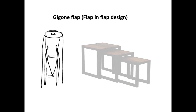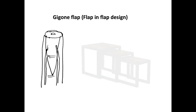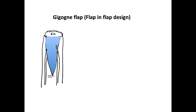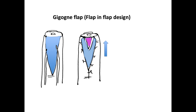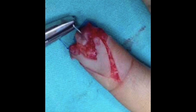The next modification of the VY advancement flap for the fingertip is the Gigan flap, a French word denoting one within the other — like a set of nesting tables. The first, blue-colored flap is raised, and within it another VY advancement flap is raised with its own movement shown by the blue arrow. Then another VY advancement flap is raised within this blue flap, shown by the pink-colored arrow. This is a clinical example of the Gigan flap.